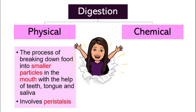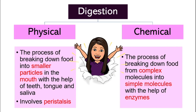Chemical digestion involves chemicals, just like the name suggests. It's the process of breaking down food from complex molecules to simple molecules with the help of a type of chemical called enzymes. This is a new word — don't worry if you don't know what it is, because we will learn about it shortly.